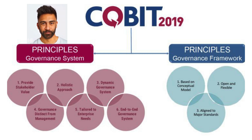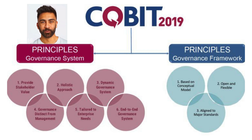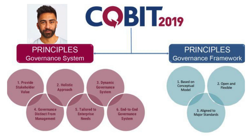COBIT's governance framework is built around five key principles: meeting stakeholder needs, ensuring enterprise objectives are achieved; covering the enterprise end-to-end by integrating governance and management of IT; applying a single integrated framework for a consistent approach; enabling a holistic approach that accounts for all enablers such as processes, organizational structures, culture, ethics, and behavior; and separating governance from management by clearly defining roles and responsibilities to ensure accountability. COBIT also defines a process model with 40 governance and management processes.